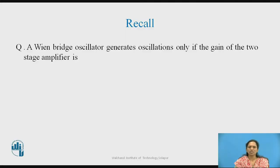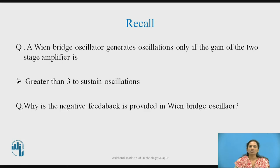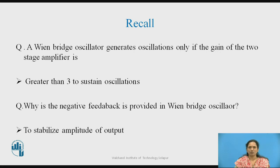Recall: A Wien Bridge Oscillator circuit generates oscillations only if the gain of the two-stage amplifier is greater than 3 — and yes, this is the correct answer. Why is negative feedback provided in the Wien Bridge Oscillator circuit? Through the resistors, negative feedback is provided in order to stabilize the amplitude of the output.